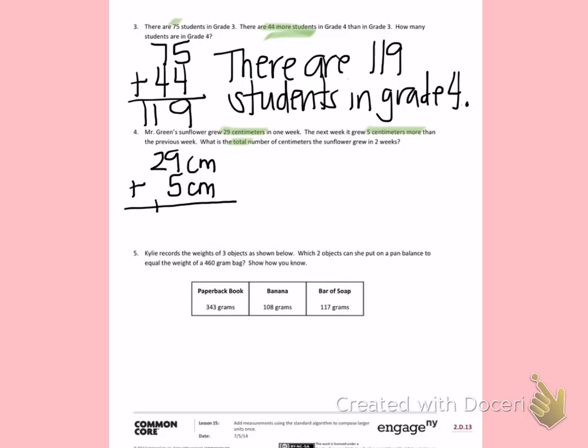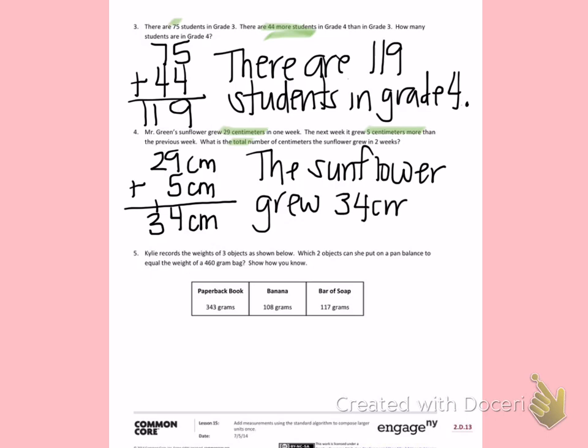9 plus 5 is 14. 2 plus 1 is 3, giving me a total of 34 centimeters. The sunflowers grew 34 centimeters.